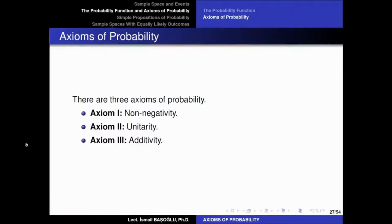Probability is defined as a function for the subsets of the sample space, because the subsets of the sample space are called events. Because we have defined probability in the form of a mathematical function, we need to believe in some axioms about it.